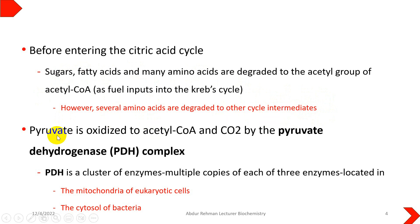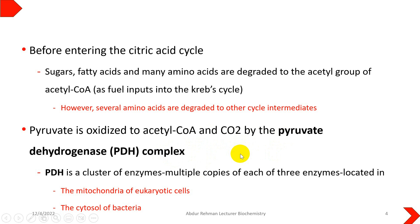Pyruvate is first oxidized to acetyl-CoA and carbon dioxide with the help of the enzyme known as the pyruvate dehydrogenase complex. It is a very famous and important enzyme because it consists of three subunits, which we will discuss.